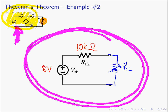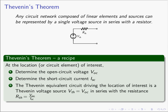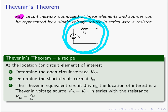Remember what Thevenin's theorem says: any circuit composed of linear circuit elements and sources can be represented by the very simple circuit of a single voltage source V_Thevenin in series with a resistor R_Thevenin. The circuit in the center is so much simpler — even a circuit with millions of elements can be represented by this tiny simple circuit. If you compute the numbers properly, anything you attach cannot tell the difference; it will behave the exact same way.